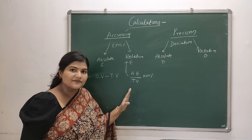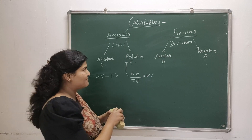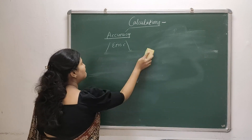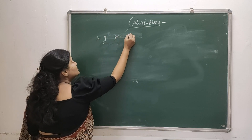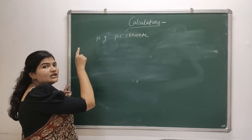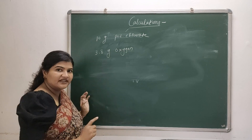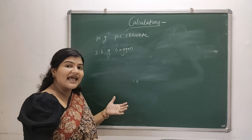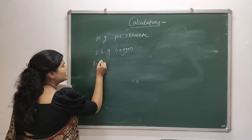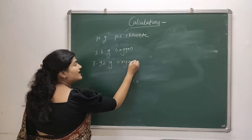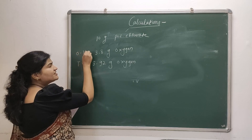First let's discuss an example for absolute error and relative error, then we'll move towards precision. Suppose I have a sample of 10 grams of potassium chloride and I decompose this sample. After decomposition, what I found is it contains 3.8 grams of oxygen — this is the mass of oxygen obtained experimentally, so this becomes my observed value. The actual mass of oxygen contained in 10 grams of potassium chloride is 3.92 grams, which is the true value.